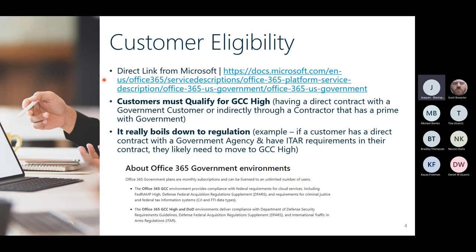You definitely can't stand this up overnight. It takes about a month or so for the tenant to get created, plus a couple weeks for approval. If you have customers looking to get into GCC High, plan for two to three months lead time before you can officially start using it. If you want a hybrid model with on-prem identity, plan for four to six months. I've run into situations where people expected less than a month and it took much longer.